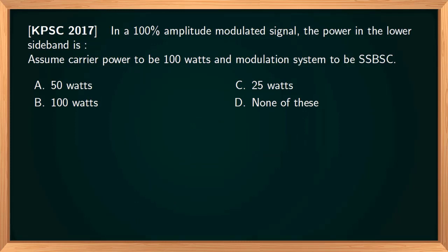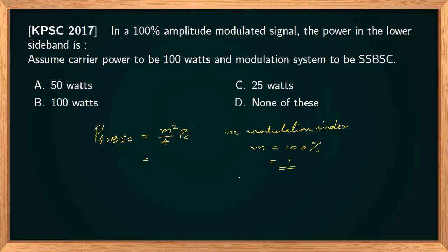This is a question about an AM modulated signal where we have to find the power in the lower sideband of SSBSC. The power of a single sideband suppressed carrier signal is M² / 4 × Pc. The modulation index M is given as 100%, so M = 1, and carrier power Pc = 100 W. Using the formula: 1² / 4 × 100 = 25 W. So the power in the SSBSC signal is 25 W.